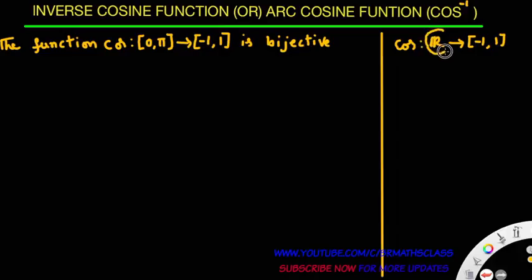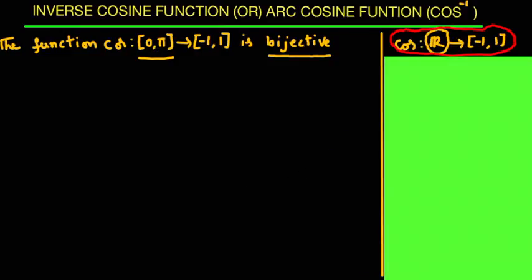You observe here, domain of cos function is all real numbers. From trigonometry chapter, we know that domain of cos function is all real numbers. But we restricted the domain of cos function to the closed interval [0, π]. What I want to say: cos function domain is set of all real numbers, then it is not a bijective function. If it is not a bijective function, inverse of this function does not exist. That's why we are restricting domain of cos function from set of all real numbers to closed interval [0, π].